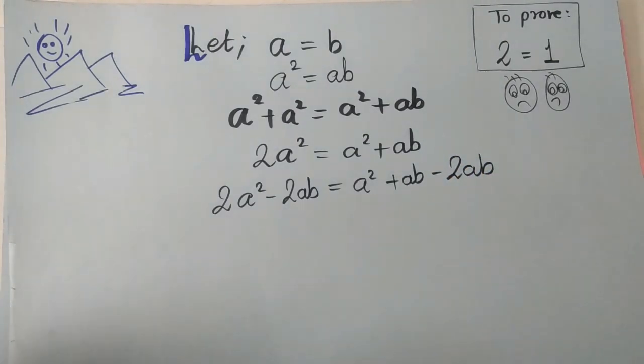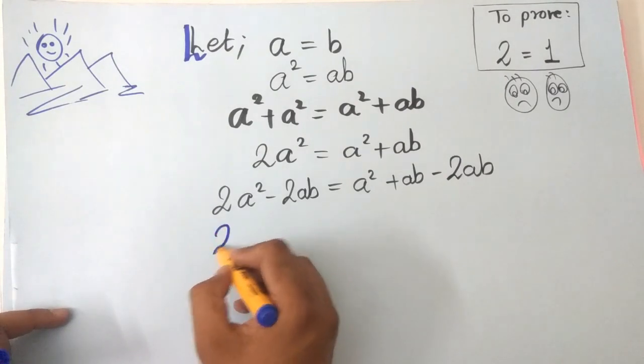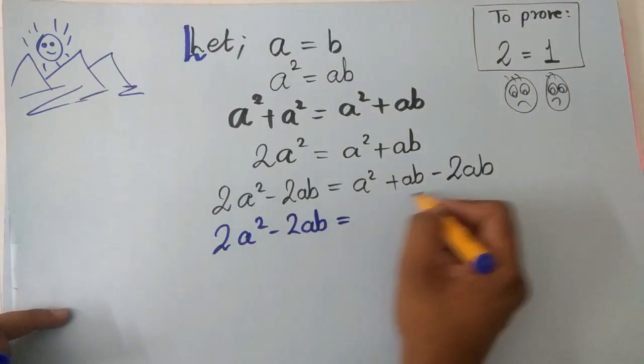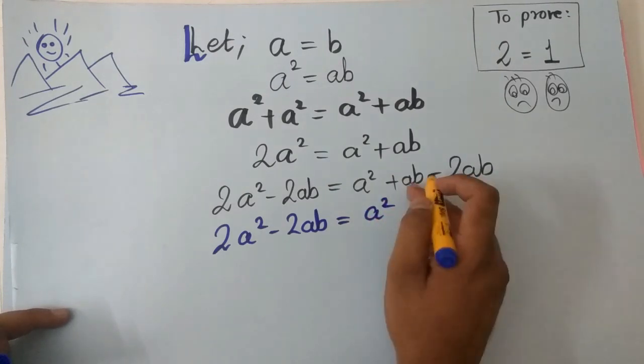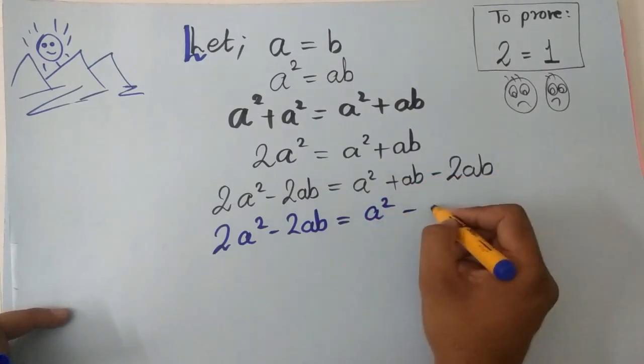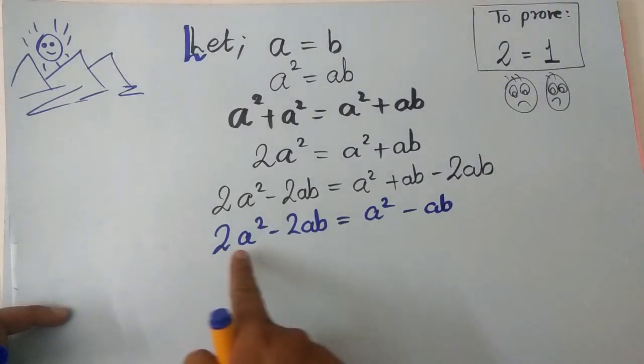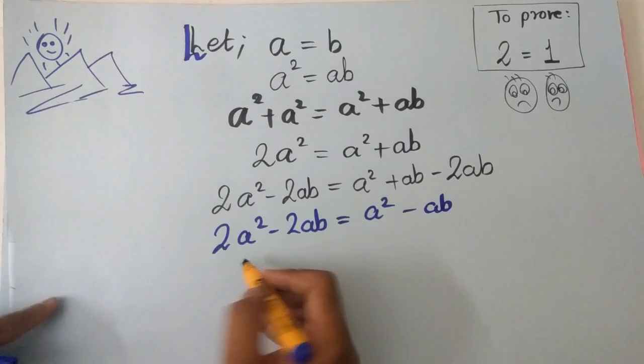As a result we would get 2a² - 2ab equals a² - ab. Now take two common from LHS.